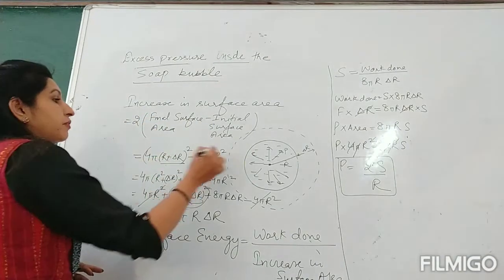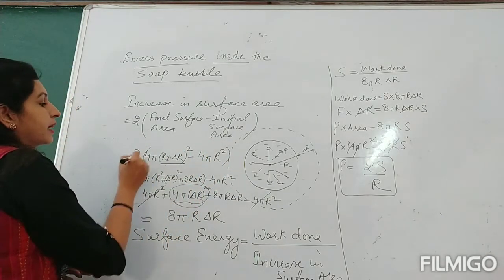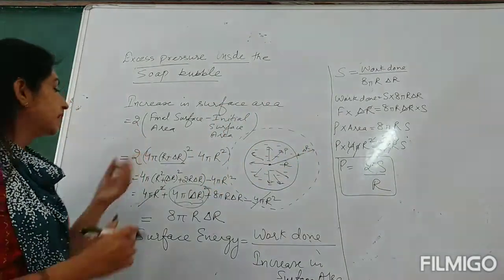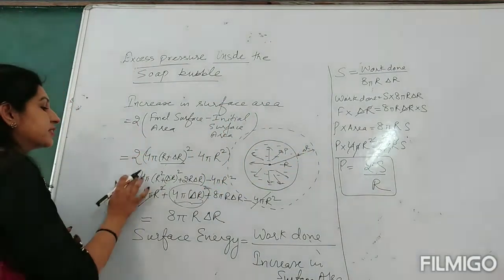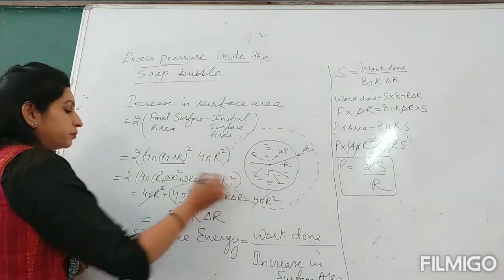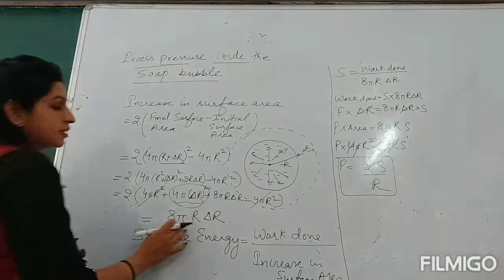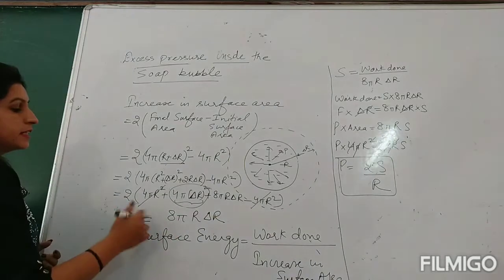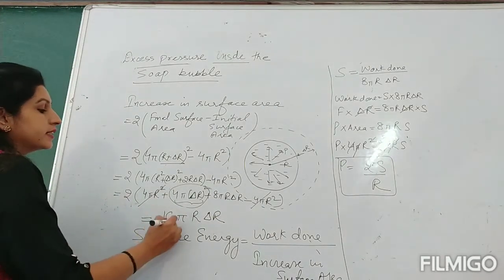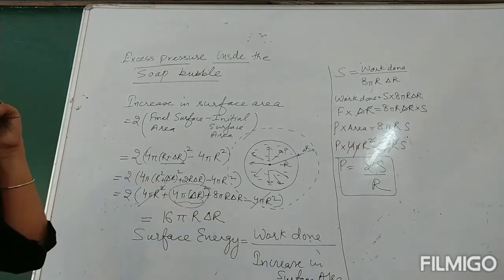Wherever we had the same calculations — final minus initial — the radius increases by delta r, so the increase in surface area is multiplied by 2. So 2 × 8 = 16, meaning the increase in surface area is 16πR·δr.